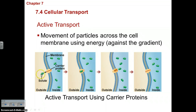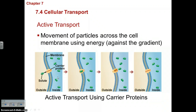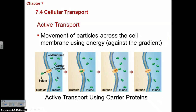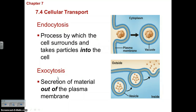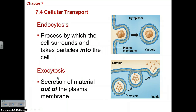In active transport, a solute particle in an area of low concentration is pushed into the cell — perhaps a food particle — into an area of high concentration, using energy. There are two types of active transport: endocytosis and exocytosis. Endocytosis is when a large particle is taken into the cell (endo = into), and exocytosis is the secretion of particles outside the cell (exo = exiting).